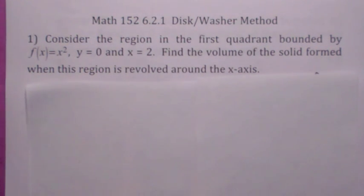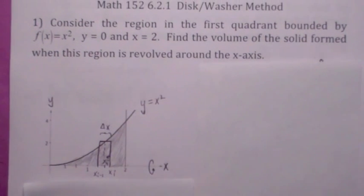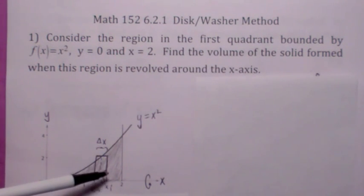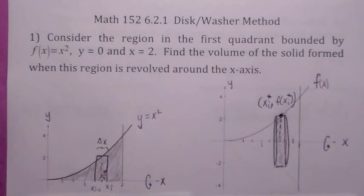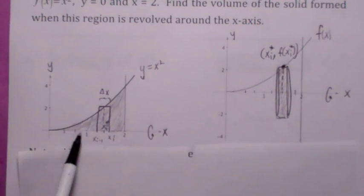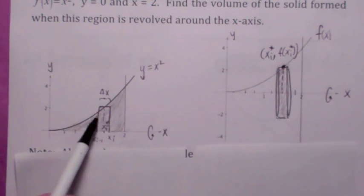This first one is the disk washer method. Suppose you have a region in the x-y plane, in this case in the first quadrant, bounded by y equals x squared, y equals 0, and x equals 2. We're going to take this region in the first quadrant and revolve it around the x-axis — you get kind of like a horn or a cone. We're going to partition this region along the x-axis into subintervals, pick an x sub i star in each subinterval, look at the area of that rectangle, and revolve it around the x-axis to get a cylinder.